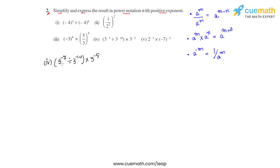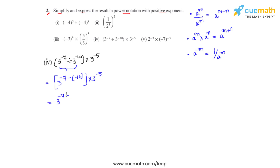In the fourth bit, we have 3 raised to negative 7 divided by 3 raised to negative 10, and this whole is multiplied by 3 raised to negative 5. The bases are same in division, so powers get subtracted: 3 raised to negative 7 minus negative 10, which is negative 7 plus 10, giving 3 raised to 3, times 3 raised to negative 5.